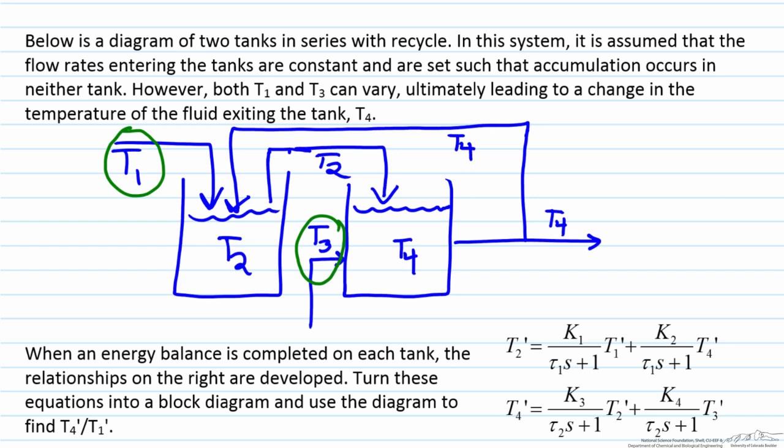Also entering this tank is a recycle from our outlet of the second tank, T4, therefore T2 can vary. We have some of the flow from the first tank entering the second tank and we have our inlet which is at temperature T3 which also can vary coming into our second tank. So therefore we have four variables here.